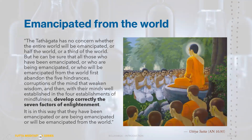In the Uttiya Sutta (Kutanikaya, Chapter 10, Discourse 95), the Buddha was questioned by the Wanderer Uttiya about the cosmos and remained silent. To ensure Uttiya did not misconceive the silence, Venerable Ananda stated: 'The Tathagata has no concern whether the entire world, half the world, or a third of the world would be emancipated. But he can be sure that all those who have been emancipated, are being emancipated, or will be emancipated from the world first abandon the five hindrances — corruptions of the mind that weaken wisdom — and then, with their minds well established in the four establishments of mindfulness, develop correctly the seven factors of enlightenment.' This inverse relationship between hindrances and Bojhangas is highlighted again, this time with the added ingredient of well establishing the four establishments of mindfulness — Satipatthana.